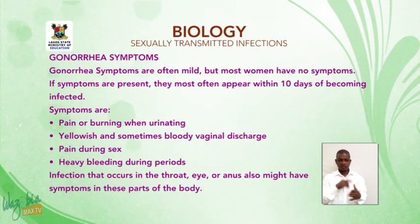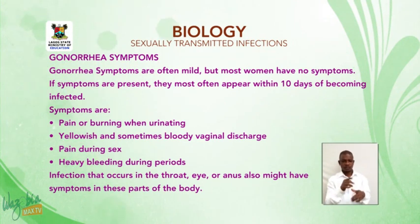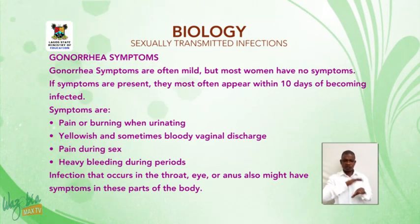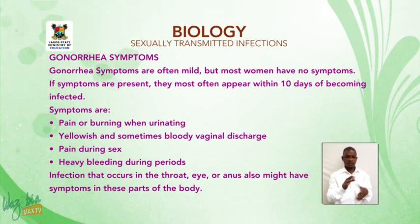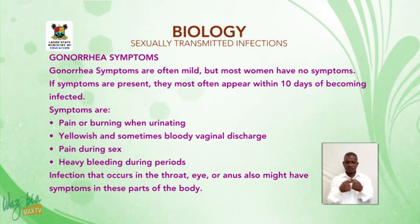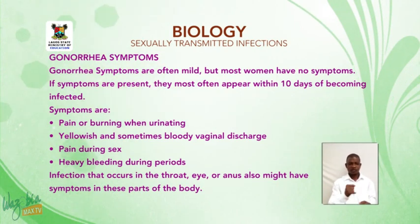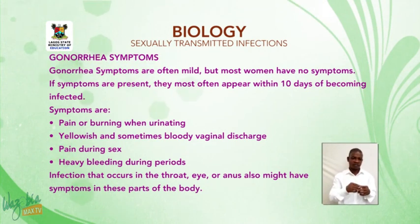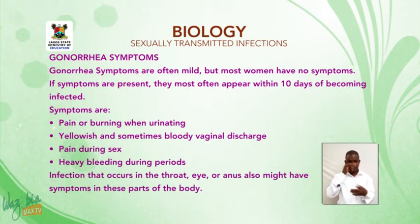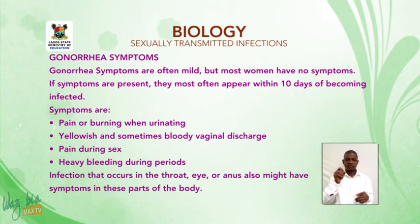Gonorrhea symptoms are often mild, but most women have no symptoms. If symptoms are present, they most often appear within 10 days of becoming infected. Symptoms include pain or burning when urinating, yellowish or sometimes bloody vaginal discharge, pain during sex, and heavy bleeding during periods. Infections that occur in the throat or anus may also have symptoms in those parts of the body.